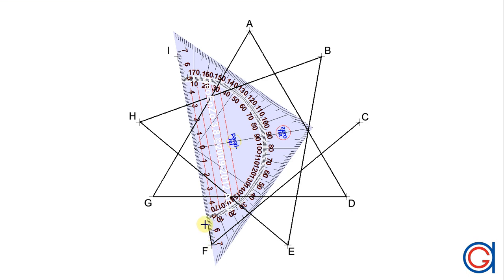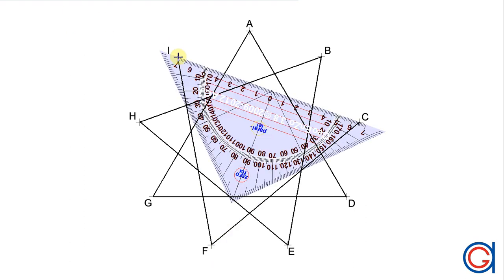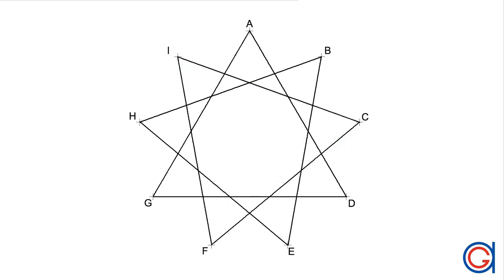Now we join vertex I skipping vertices G and H, vertex I to vertex C skipping vertices A and B. So now we have completed our order 3 star nonagon.